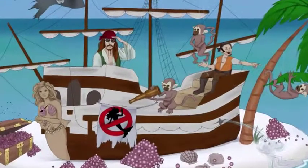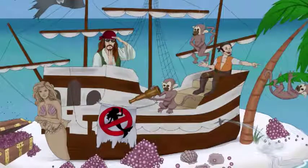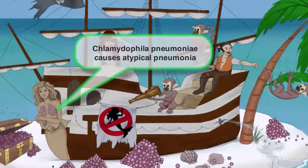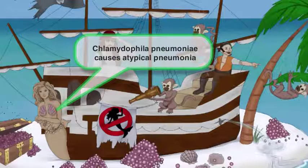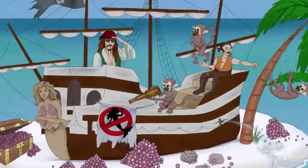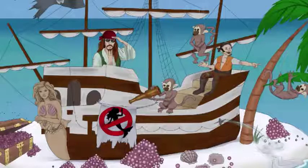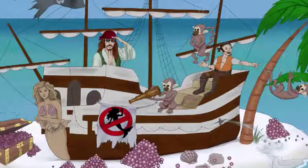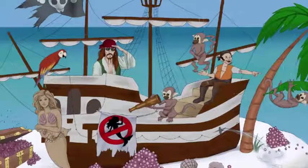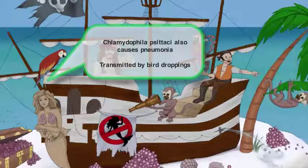We'll represent this pneumonia by giving our adult mermaid a clamshell bra — these clamshells are meant to look like lungs — and we'll have some algae growing on these as well to represent pneumonia. Chlamydophila psittaci also transmits pneumonia, but you need to remember that it's transmitted by birds, and oftentimes parrots. Question stems will usually mention pet store workers or bird owners developing respiratory problems. In our sketch, we'll have a parrot pooping on the mermaid's lungs to represent this transmission.